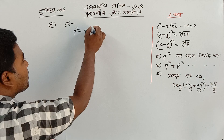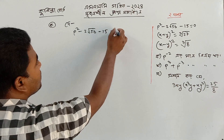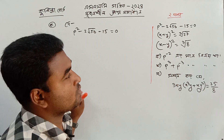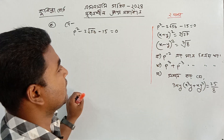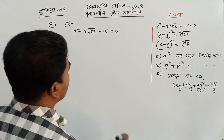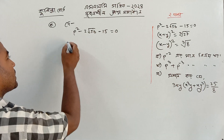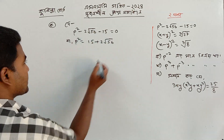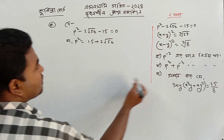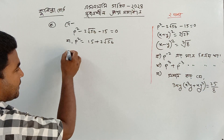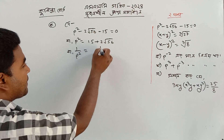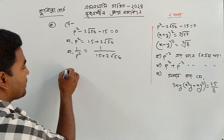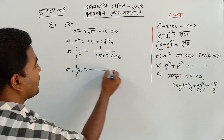Two root over 56 minus 15 equal to 0. This is minus two root over 56 minus 15 equal to 0. So I will be able to write: our table is equal to P plus 2 root over 56. We will do this: 1 by P square R.